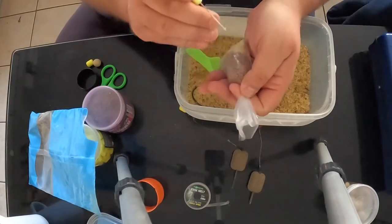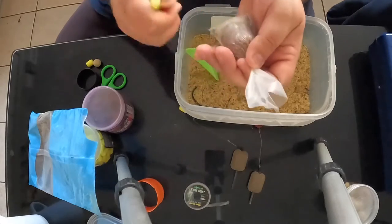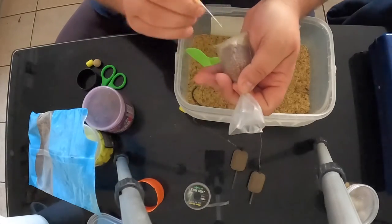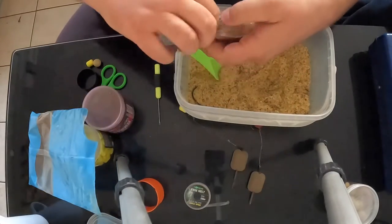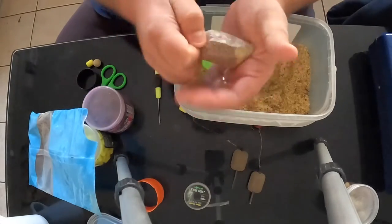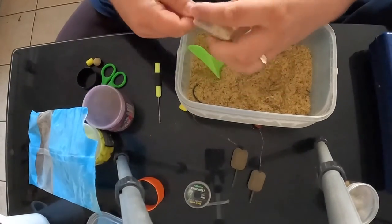I like to give the bag a few piercings with a baiting needle or a splicing needle. This just helps get it out of the bag when you're making it and helps it dissolve better and stay on the lake bed rather than floating up to the top.